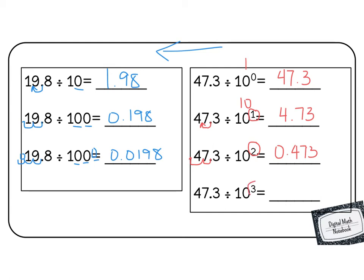And this time we have 3 place values. 1, 2, 3. And we fill in that hole with a 0. So our answer would be 0.0473. Make sure that you pause and type these answers into your digital math notebook now.